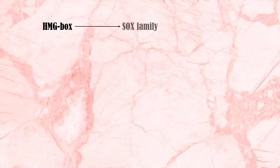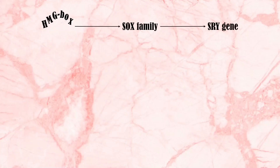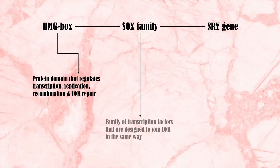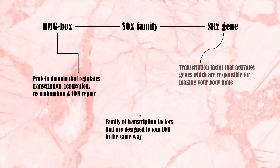The SRY protein belongs to the high-mobility group box, specifically to the SOX gene family. The HMG box is a protein domain that is involved in the regulation of transcription, replication, recombination and DNA repair. SOX genes are a family of transcription factors, which are proteins that bind DNA sequences and control the transcription of genetic information from DNA to mRNA.